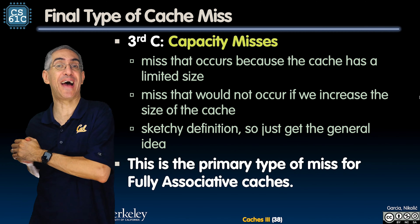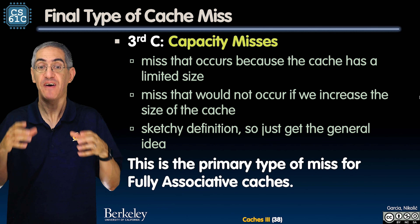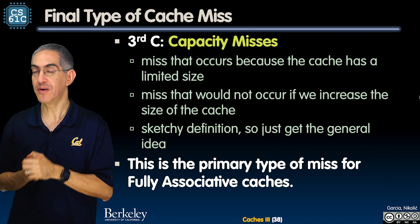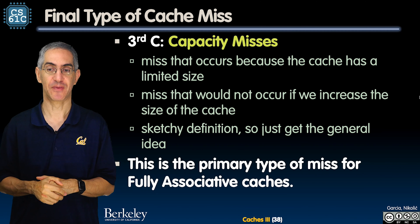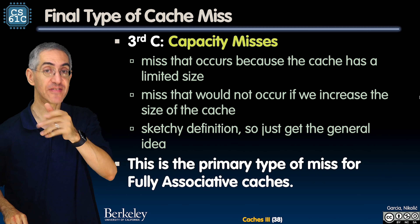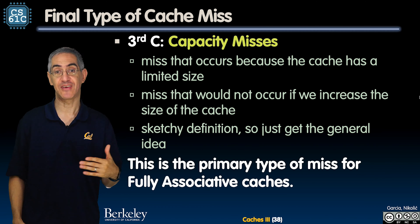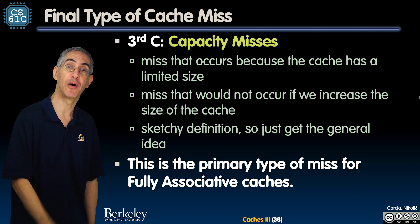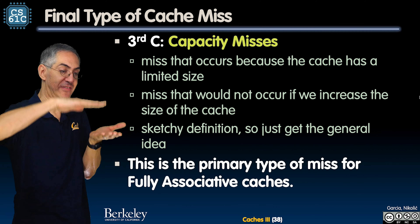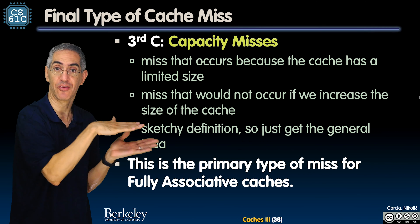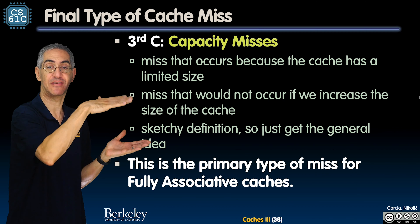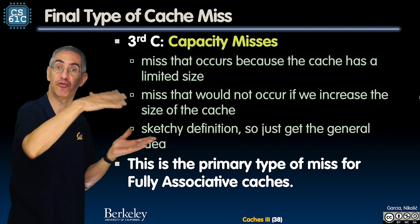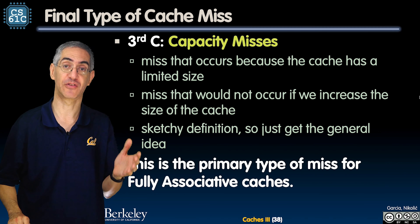The third kind of miss is called a capacity miss. This is a miss that if I could have just grown my cache bigger, I wouldn't have had. A capacity miss is one that wouldn't have occurred if I had a bigger cache. With a fully associative cache, you take a compulsory miss every time you first visit a block of memory, but the other kind of miss you get is a capacity miss.